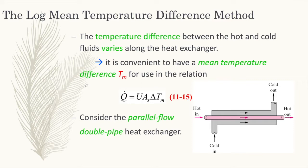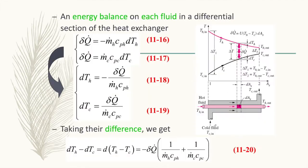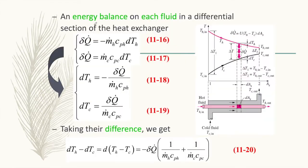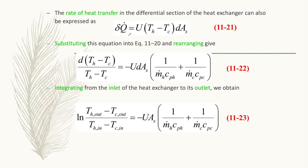We consider a parallel flow double pipe heat exchanger. An energy balance on each fluid in the differential sections of the heat exchanger gives us differential forms. You don't have to worry because you will not deal with the derivations of this equation. After doing some derivation, the rate of heat transfer in the differential sections can be expressed as: delta Q-dot equals U times (T_hot minus T_cold) times dA_s.